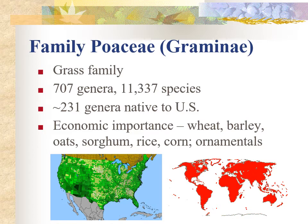This lecture is going to be on the family Poaceae, commonly known as the grass family. The historic name for this family is the Graminae, because Graminae is the Latin word for grass. This is a huge family with over 700 genera and over 11,000 species, and it is the most commonly occurring flowering plant family on Earth.